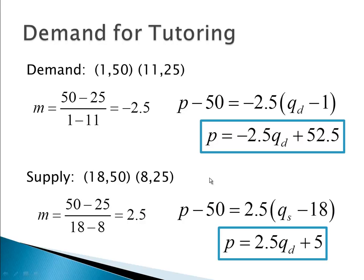In a similar process for supply, I pick two points off the graph and find the slope by doing change of Ys over change of Xs. I get 2.5 — it's a positive slope, which is good because supply is a positive relationship. I pick the point 18 comma 50, plug in the slope and the values. I put a Qs for supply quantity. Taking 2.5, multiplied by negative 18, then adding the 50 gives me a constant of 5. So this should be P equals 2.5 Qs plus 5.